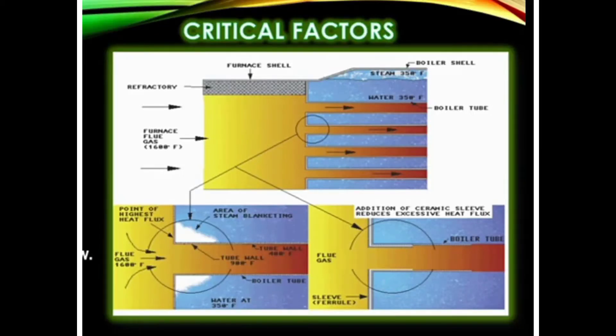Welcome back to learning. Today we are going to discuss steam blanketing, which is one of the causes of boiler tube failure. You can see in this slide that flue gases are coming from the left side at 1600 Fahrenheit and entering into the boiler tubes. This is a water tube boiler, where water is inside the tubes and flue gases are outside.